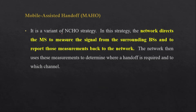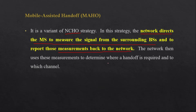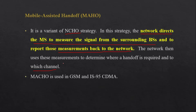MAHO is a variant of the NCHO strategy. In this strategy, the network directs the mobile station to measure the signal from surrounding base stations and to report those measurements back to the network. The measurement is done by the mobile station and reported back to the network, which then uses this information to determine where a handoff is required and which channel to use. This gives better and more accurate results, and is used in GSM and IS-95 CDMA.